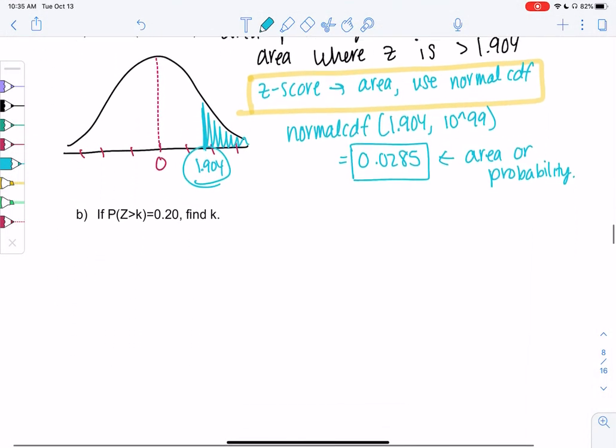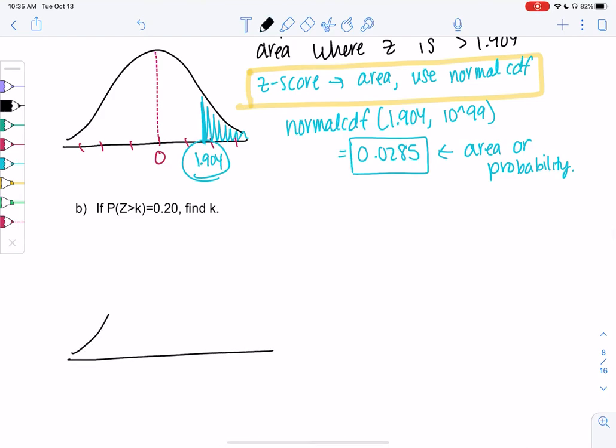Let's try one more. Again, it's the standard normal curve, so zero in the middle. This says P of Z greater than k, so that makes me think I'm shading to the right for greater. Z equals 0.20, which means 0.20 is area because it's probability. So it basically says area to the right.